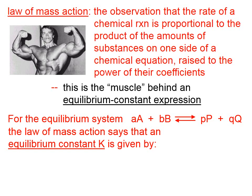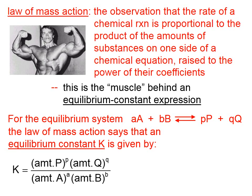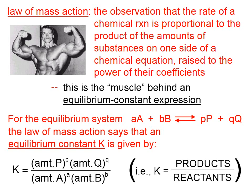The law of mass action says that an equilibrium constant, K, is given by this equation here. The amount of product P raised to the power of its coefficient times the amount of product Q raised to the power of its coefficient divided by the amount of reactant A raised to the power of its coefficient and also divided by the amount of reactant B raised to the power of its coefficient. In other words, an equilibrium constant in general is written products raised to the powers of their coefficients over reactants raised to the power of their coefficients.